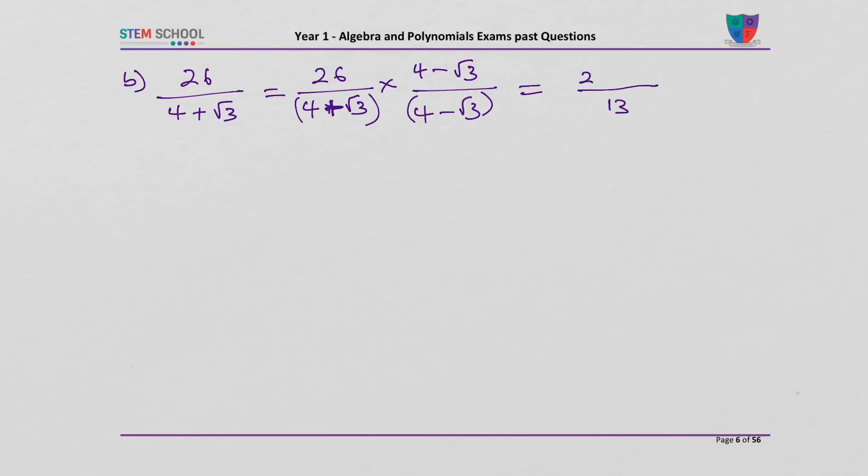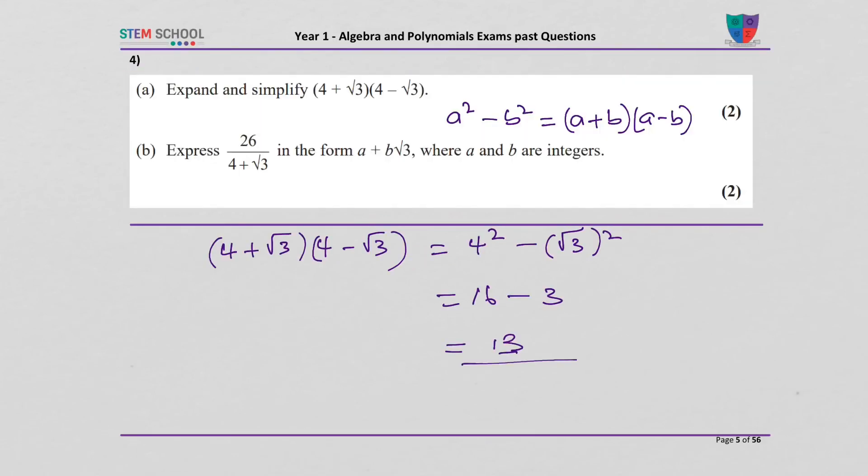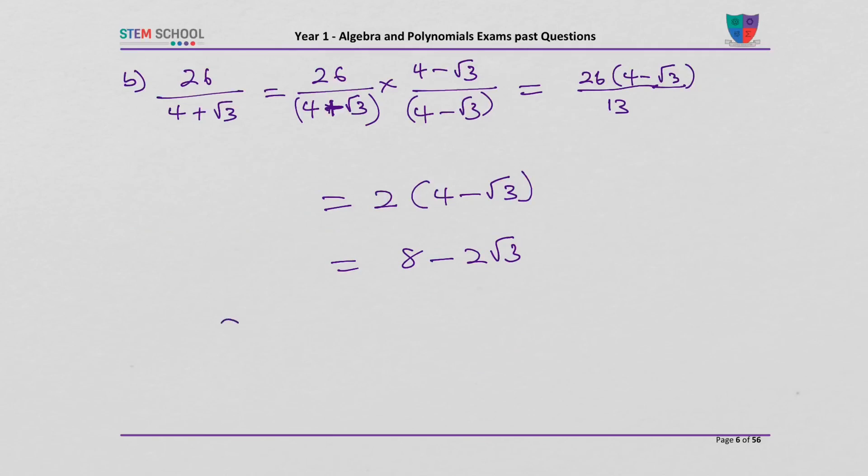The numerator would be 26 times 4 minus root 3. 26 divided by 13 is 2. So that would be 2 times 4 minus root 3. And that would be 8 minus 2 root 3. If you look at the question, it's asking for a and b, where a is 8 and b equals minus 2.